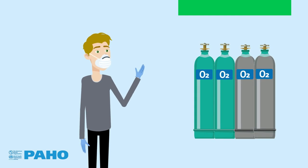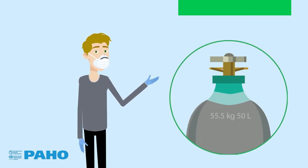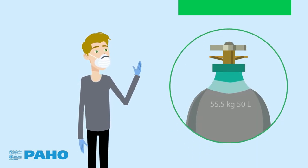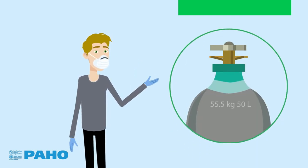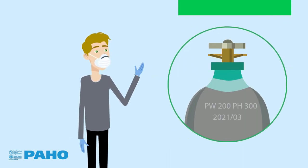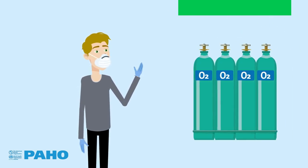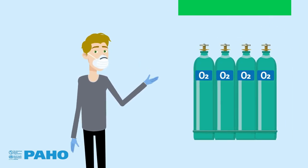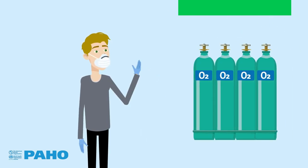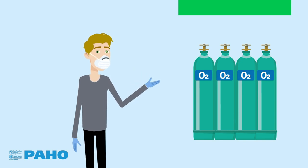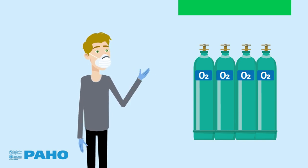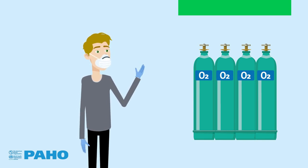In summary, cylinder specifications must include: type of material, internal volume in liters, and working pressure in atmospheres. If your country uses other units of measurement, this should be noted.